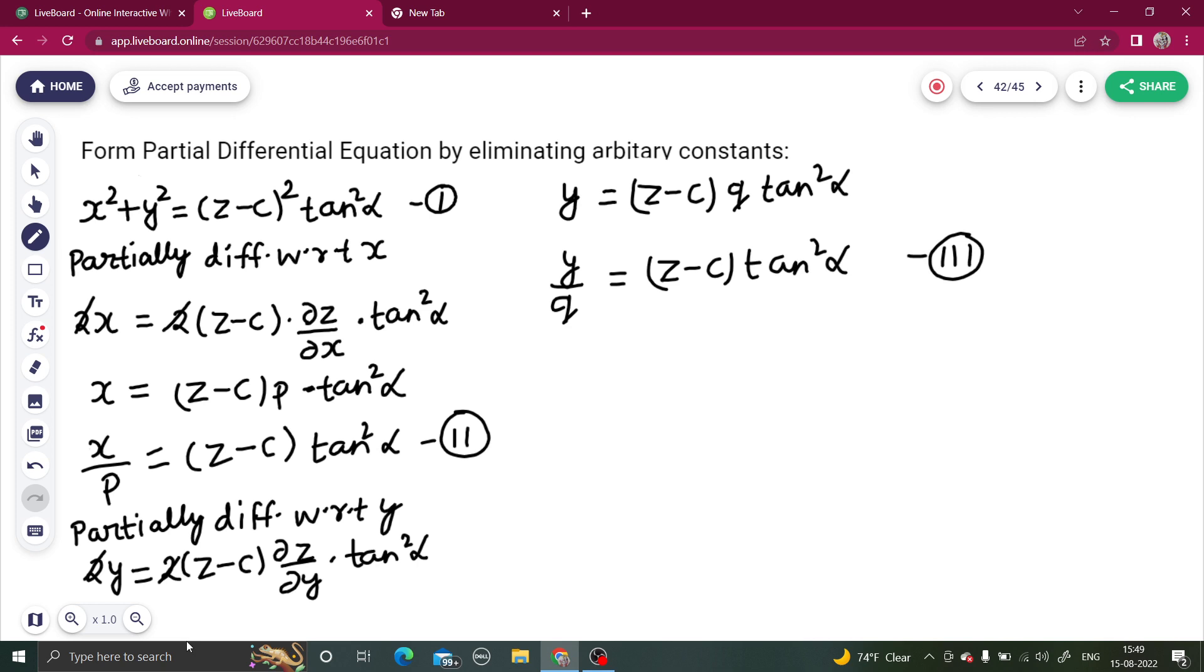Now, z minus c 10 square alpha. Find z minus c 10 square alpha from equation number 2 and equation number 3, you are getting them to be equal to same quantity is equal to x by p and y by q in the other case. We can equate them simply.